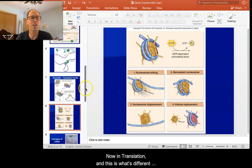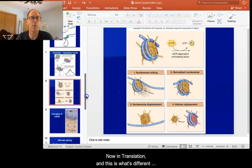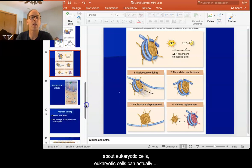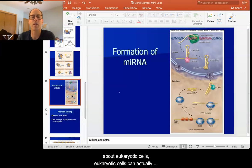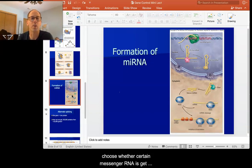Now in translation, and this is what's different about eukaryotic cells. Eukaryotic cells can actually choose whether certain messenger RNAs get translated into protein. And this works, and by the way, we don't know a lot about this, but we are getting a better understanding.